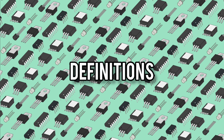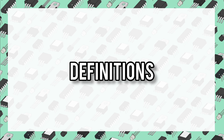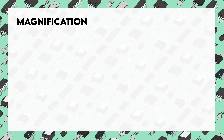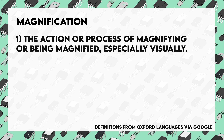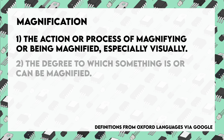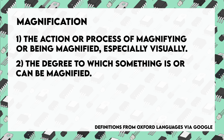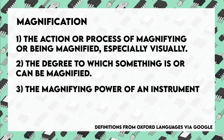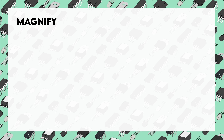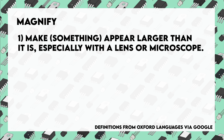Before we go further, I think it's important to define a few terms so that we're all on the same page. First up is magnification. According to the Oxford Dictionary, magnification is defined as the action or process of magnifying something or being magnified, especially visually; the degree to which something is or can be magnified; or the magnifying power of an instrument. The root of all three definitions is magnify, which means to make something appear larger than it is, especially with a lens or a microscope.